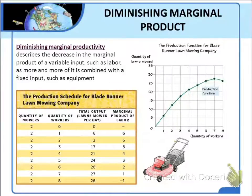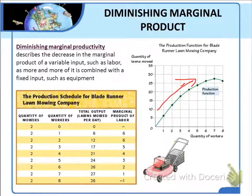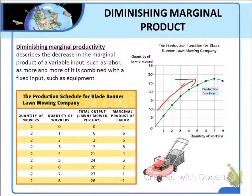You can also see the effect of diminishing marginal productivity on the graph. As the number of workers increases, total output continues to rise, but it rises by less and less with each additional hire. Notice that the slope is getting flatter and flatter. The graph of the production schedule becomes flatter as employment continues to rise. Note that marginal product does not decrease until the third worker is hired — there were enough mowers to allow some initial growth without a decline in marginal productivity.